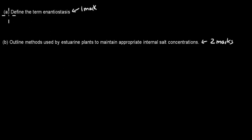So this is the question. Part A says define the term enantiostasis with one mark, and part B says outline methods used by estuarine plants to maintain appropriate internal salt concentrations, and that's worth two marks. Pause the video, attempt the question, and then press play when you're done.